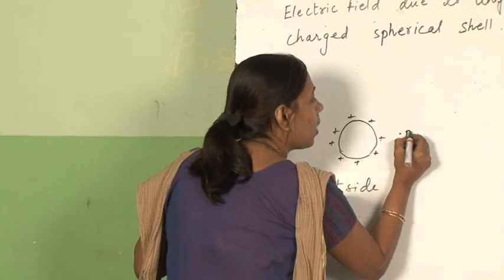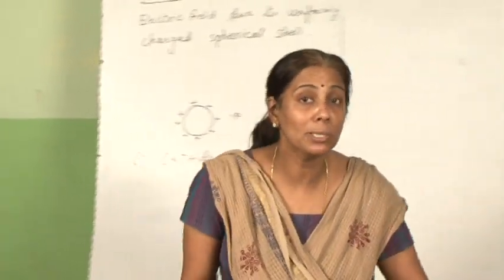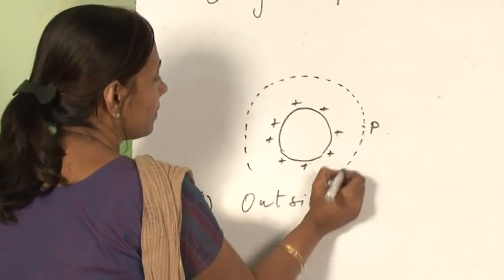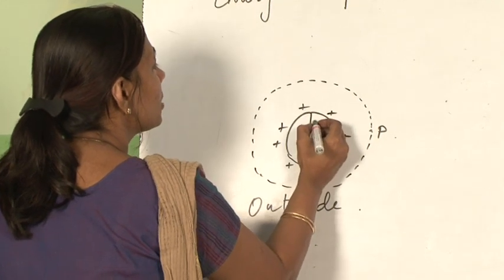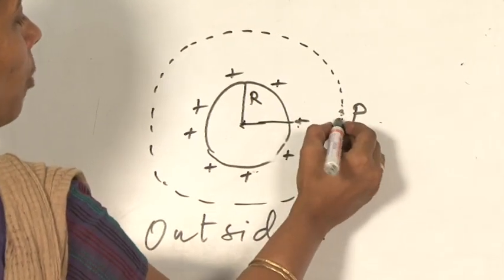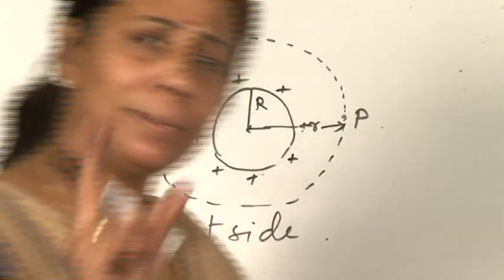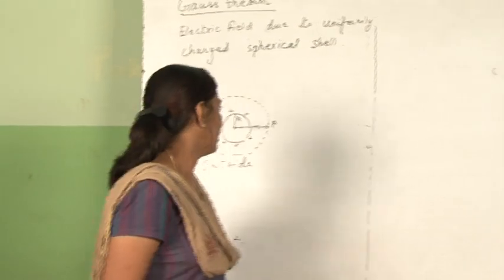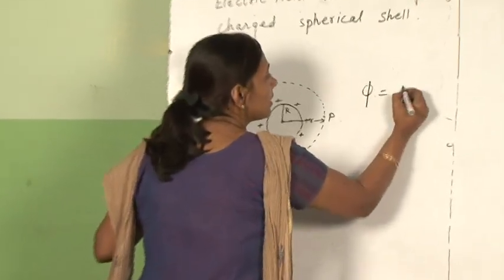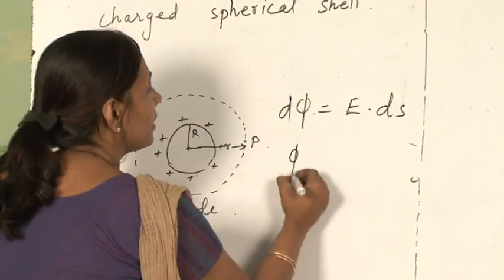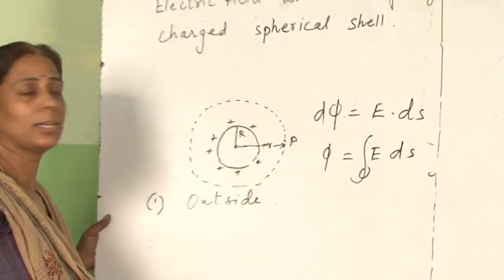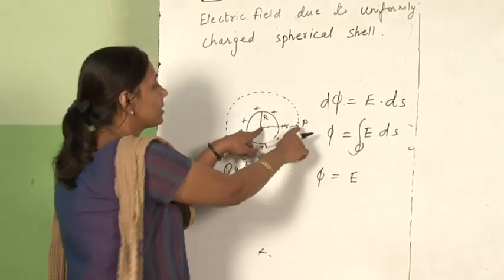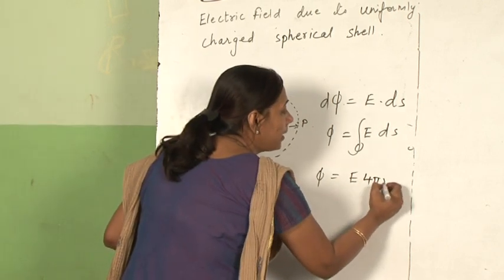Let us take any point P outside. First we draw a Gaussian surface, which will of course be a sphere. Suppose the radius of the charged sphere is capital R and the distance to point P is small r. We write two equations: first by definition we find the flux, and second by Gauss theorem, then equate them. The flux by definition is ∮E·dS. The total surface area of the Gaussian sphere is 4πr², so flux = E·4πr². This is equation 1.